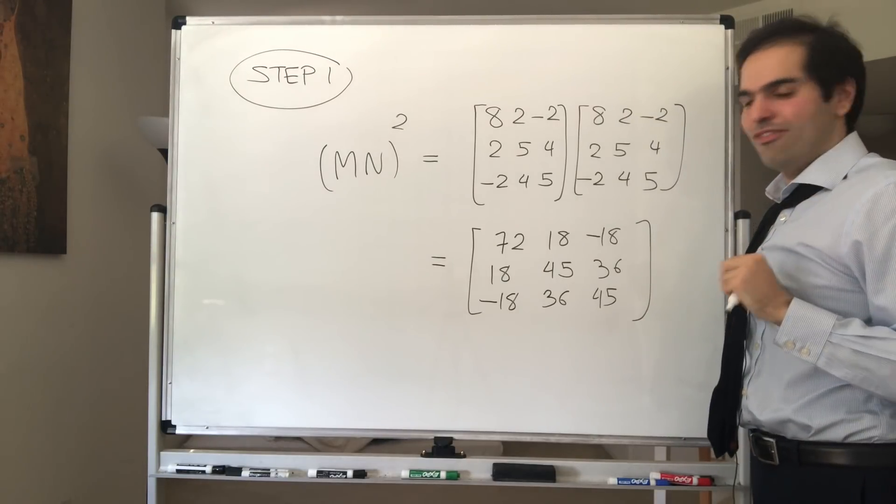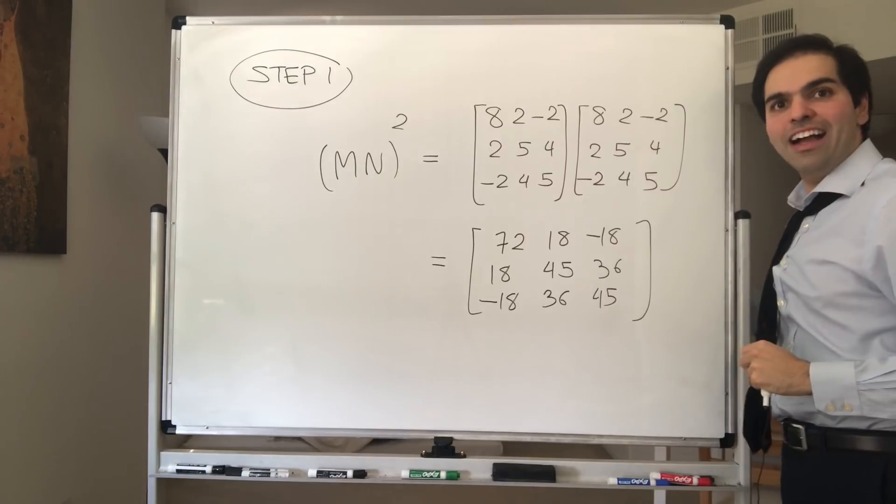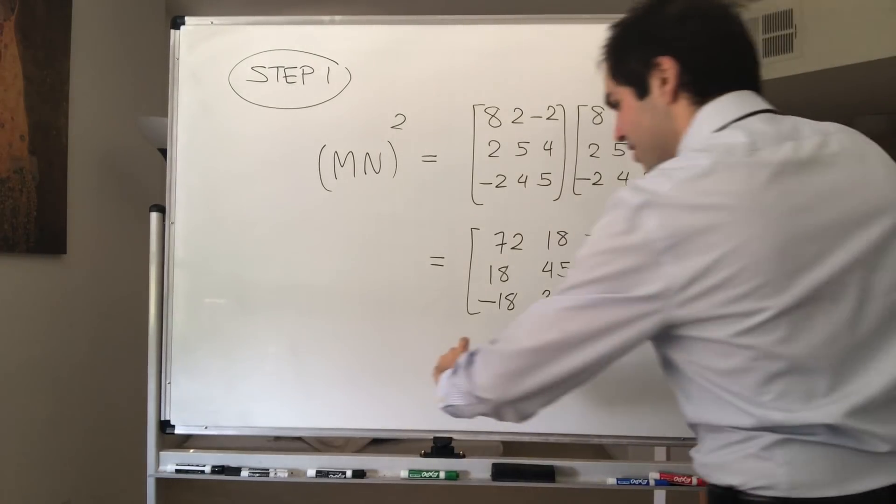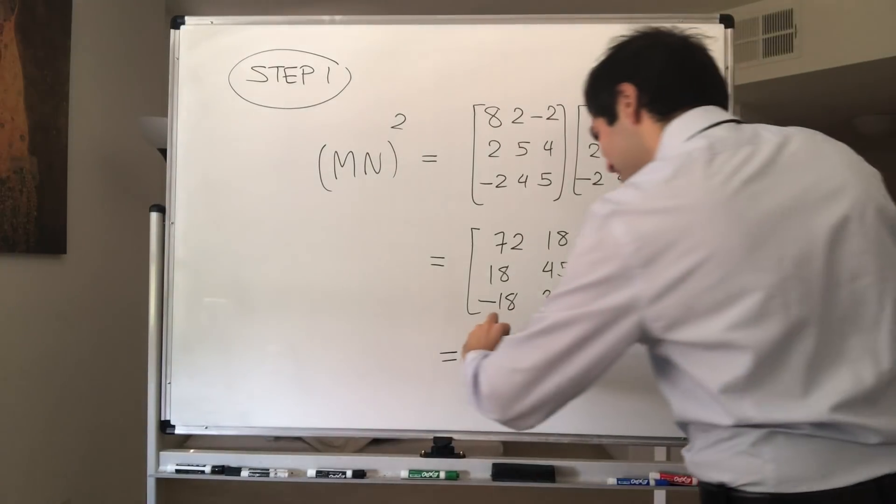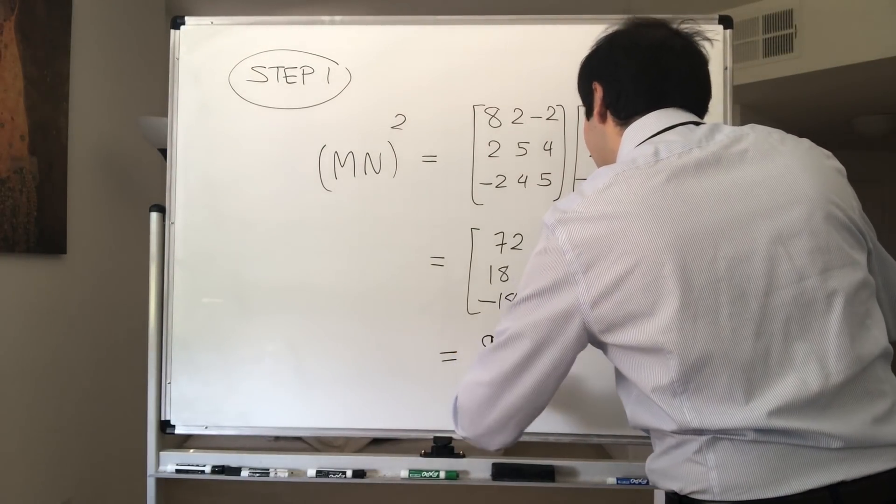But notice, here's a beautiful thing, there is a common factor of 9. But nein, das geht doch nicht.